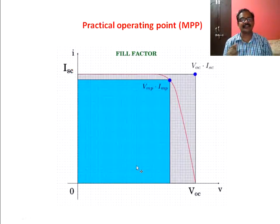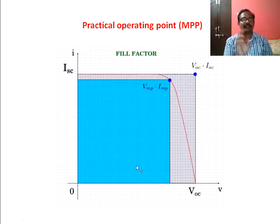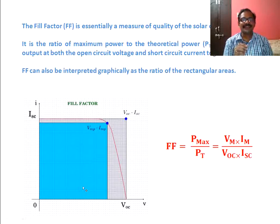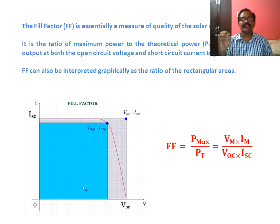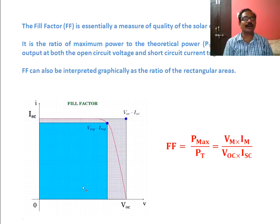In practical conditions we get a red curve. The blue color area rectangle is the practical maximum power, which is a multiplication: PM equals VM into IM. Fill factor is the ratio of maximum power to the theoretical power of a solar panel. Maximum power is VM into IM, and theoretical power is VOC into ISC. Therefore, fill factor is the ratio of Vmax into Imax divided by VOC into ISC.